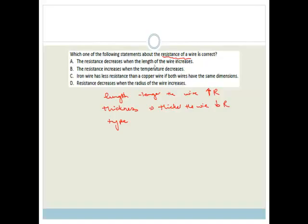Let's see. The resistance decreases when the length of the wire increases. It's totally incorrect because they want to know which is correct. The resistance increases when the temperature decreases. We need to talk about that. Iron wire has less resistance than copper wire if both wires are the same dimensions. What you should know is copper wire is the one with the least resistance. It has got such little resistance. That's why we use it in all our circuits. So that's wrong.